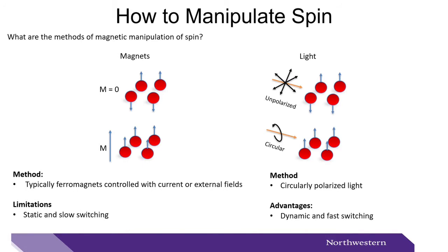In general, there are two main methods of magnetic manipulation. Magnets, typically ferromagnets, which can be controlled with current or external fields to switch between spin states. This tends to be favorable because they can be integrated into devices. However, they also tend to be static and slow. Another method is circularly polarized light. This can allow us to select spin states with one of the circular helicities. The advantage of this method is that we can do dynamic and fast switching between spin states, and in this presentation we will focus on utilizing this intriguing knob.